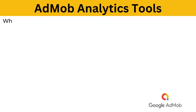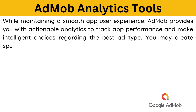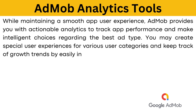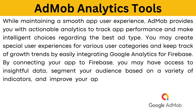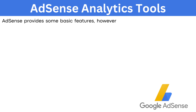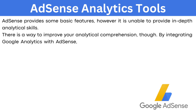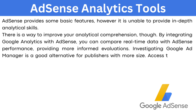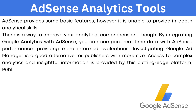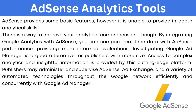AdMob analytics tools: while maintaining a smooth app user experience, AdMob provides actionable analytics to track app performance and make intelligent choices regarding the best ad type. You may create special user experiences for various user categories and keep track of growth trends by integrating Google Analytics for Firebase. By connecting your app to Firebase, you may access insightful data, segment your audience, and improve your app, which will eventually increase your income streams. AdSense analytics tools: AdSense provides some basic features but is unable to provide in-depth analytical skills. By integrating Google Analytics with AdSense, you can compare real-time data with AdSense performance. For publishers with more scale, Google Ad Manager provides access to complex analytics and allows efficient management of AdSense, AdExchange, and a variety of automated technologies throughout the Google network.